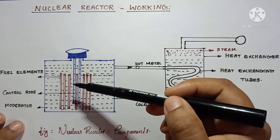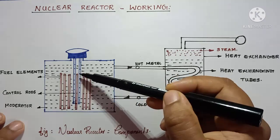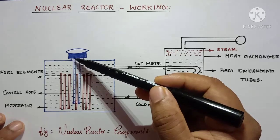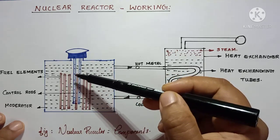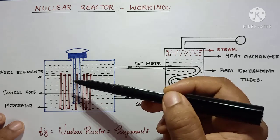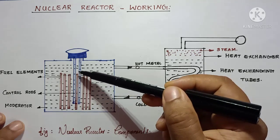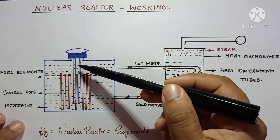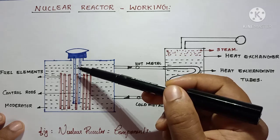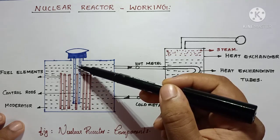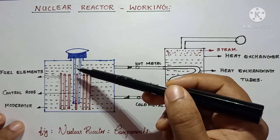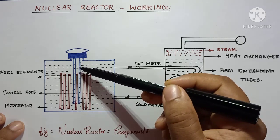Control rods are normally made up of boron or cadmium material. These control rods can absorb the electrons released after the nuclear fission, so that can reduce the speed of bombardment of electrons with the other atoms and can control the speed of nuclear fission.